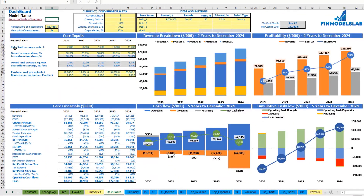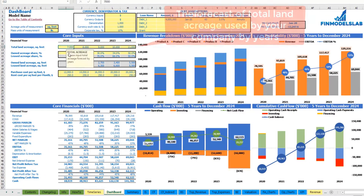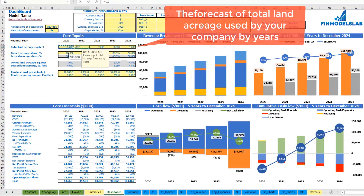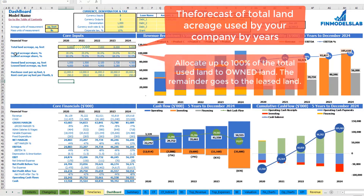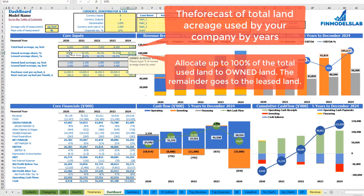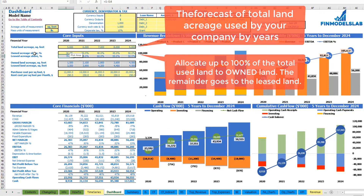The next step is to set up your total land acreage by years — for example, 5,000 in the first year and an additional 1,000 acres each next year. Then allocate this total acreage by owned acreage and leased or rented acreage — for example, 30%, 35%, 40%, 45%, and 50% for owned acreage, with the rest being leased. You may see the absolute values of acreage in square feet based on this allocation.